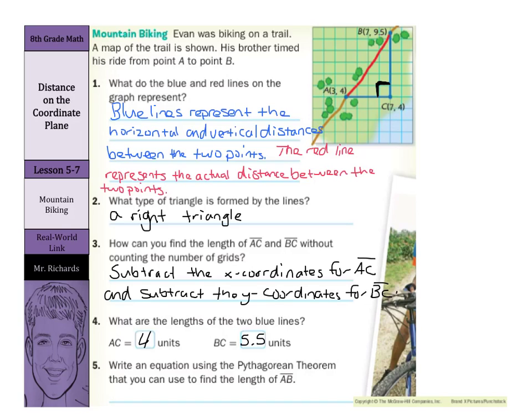And now when we want to write an equation using the Pythagorean theorem, well, let's label these sides. AC was 4, BC was 5½. And when we look here, the red line is our c, it's our hypotenuse. And I'm going to call my 4a and my 5½b. So instead of a² + b² = c², I can just say, okay, 4² plus 5½ squared is going to equal c². And that's how you could find the length for AB.